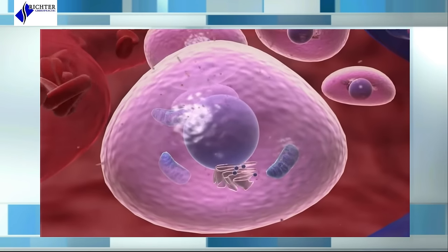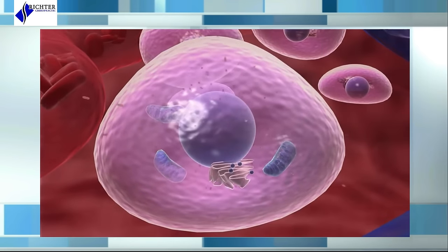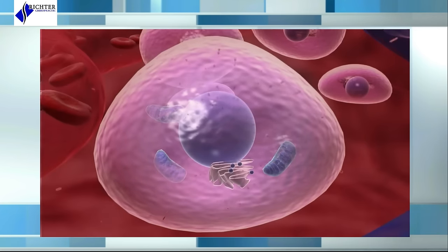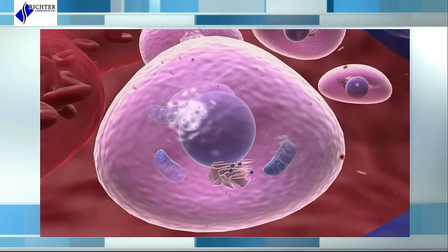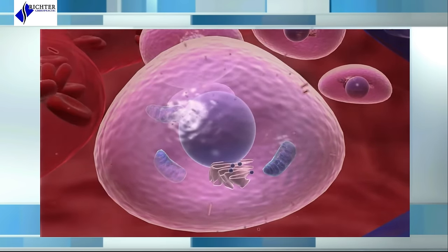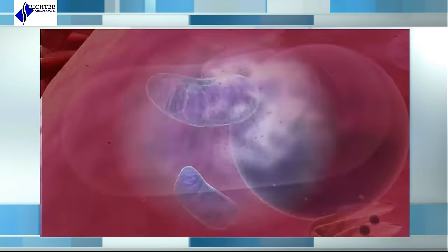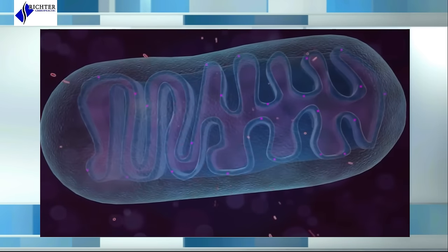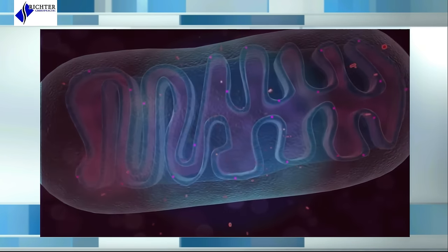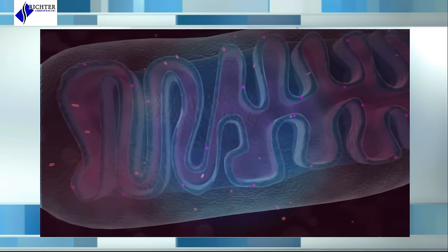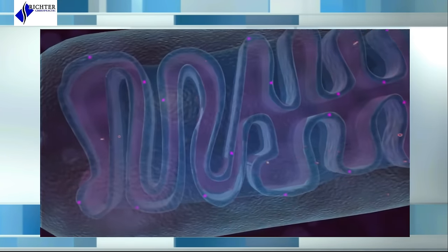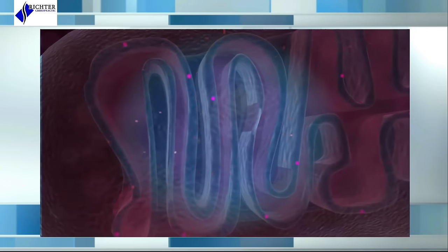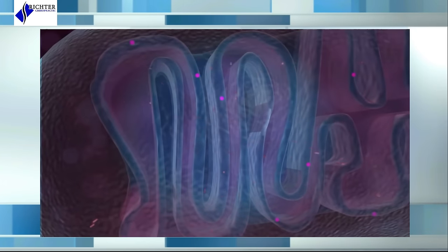Energy from these absorption events will be dissipated as heat, generating a soothing warmth in the tissue. The primary target for photobiomodulation is the cytochrome C complex, which is found in the inner membrane of the mitochondria.